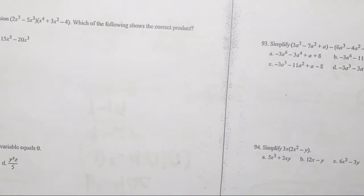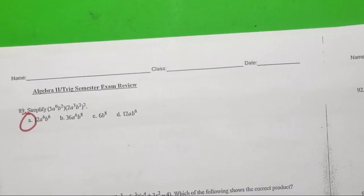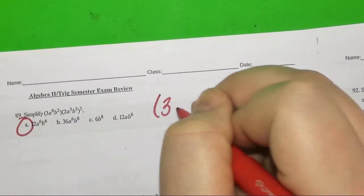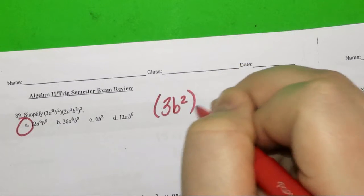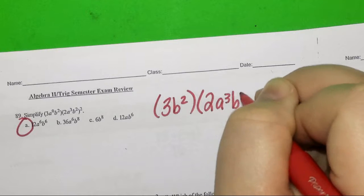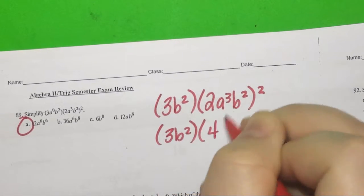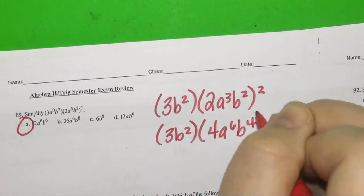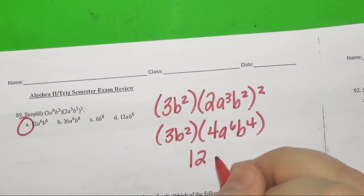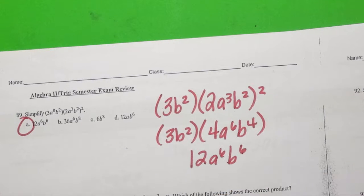88, if you missed that, I will cry. Every group gets a point. What answer would make me mad? C would make me mad because you're supposed to do the opposite of the x, so it's supposed to be 3, 6. 89 is A. A to the 0 is really 1, so I have 3B squared times 2A to the 3rd B squared all squared. 2 squared is 4. 3 times 2 is 6. So I have 12A to the 6B to the 6.